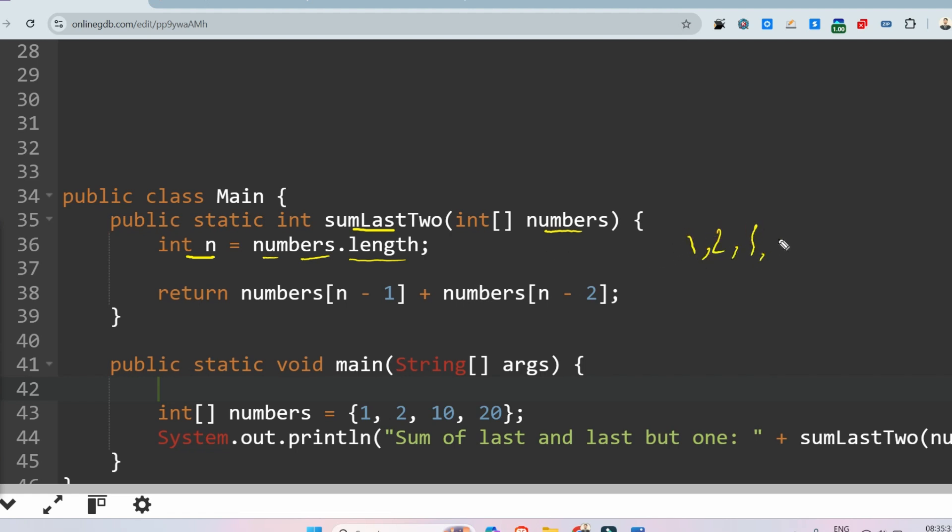Then return numbers[n-1] plus numbers[n-2]. Let's say the array is 1, 2, 3, and 4. So size of this array is 4, but indexing starts from 0, 1, 2, 3. That's why if we are fetching 4, then this element does not exist. Up to n-1, that is 3, elements are existing. So that's why we have to get length, that is 4 minus 1, to get the last element, and length minus 2 to get the second last element. So returns numbers[n-1], n is the size of the array, plus numbers[n-2]. So that's what we have to do.